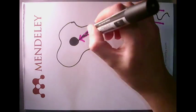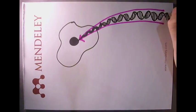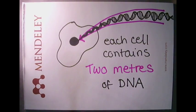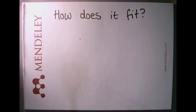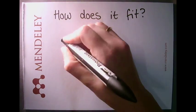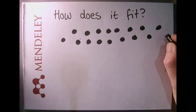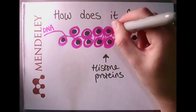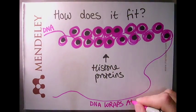Inside every cell there are two meters of DNA. That's a whole lot of DNA, so how does it all fit inside? There are proteins inside cells called histones that the DNA wraps around so that it takes up less space.